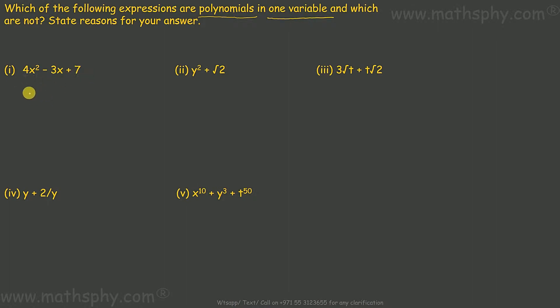This one here, constant is alright, variable has power of 2, means positive integer. So this is a polynomial. I don't see any other variable other than y, so it's one variable.